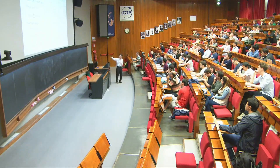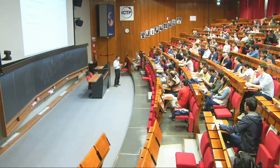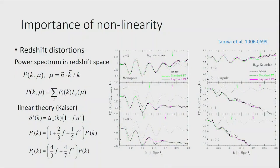The deviation is larger for the quadrupole because it is mainly coming from the velocity-velocity power spectrum, and it is known that nonlinearity is more important for velocity. On large scales you have coherent inflow motion — this is the origin of the velocity divergence spectrum — but on small scales there are large velocity dispersions that dilute this coherent motion, causing damping. The amplitude of coherent motion is destroyed. This is determined by the power spectrum of velocities, which has larger nonlinearity.